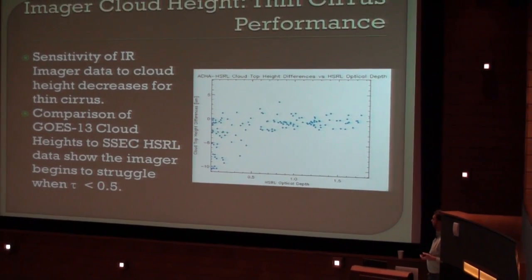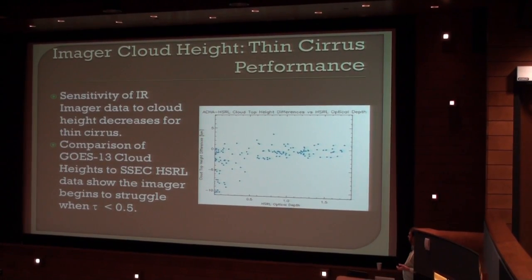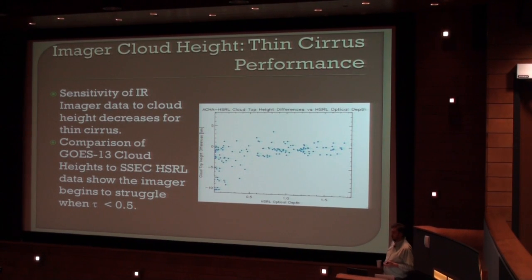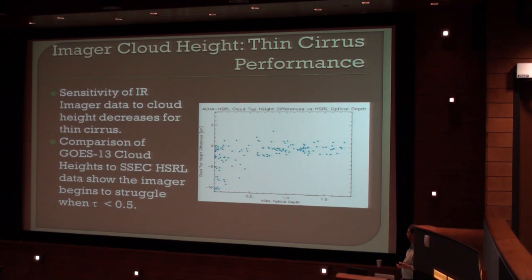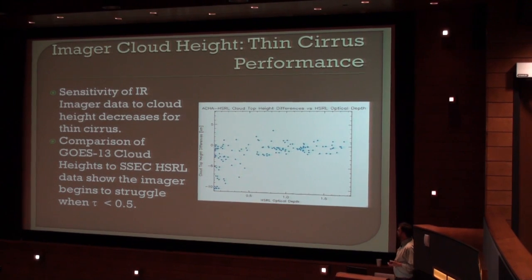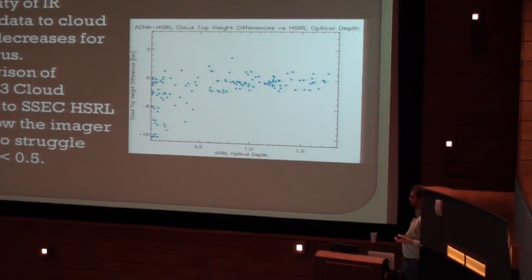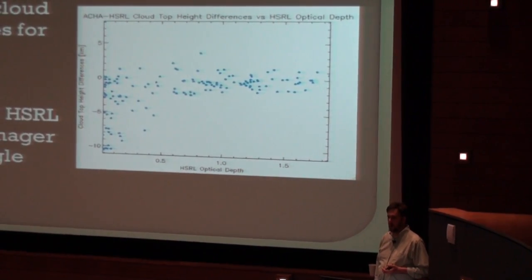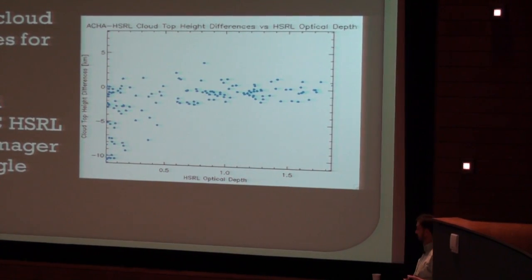Here's a GOES result. You can ask: how well do we really do, instead of those theoretical calculations? This is a GOES-13 result, which has water vapor and CO2 — a better retrieval than VIIRS for cloud height. The x-axis is cloud optical depth, from Norman, Oklahoma, a couple months in 2002. You can see height errors on the y-axis. We do pretty well for optical depth better than 0.5 — that's kind of what I would call our limit of success.